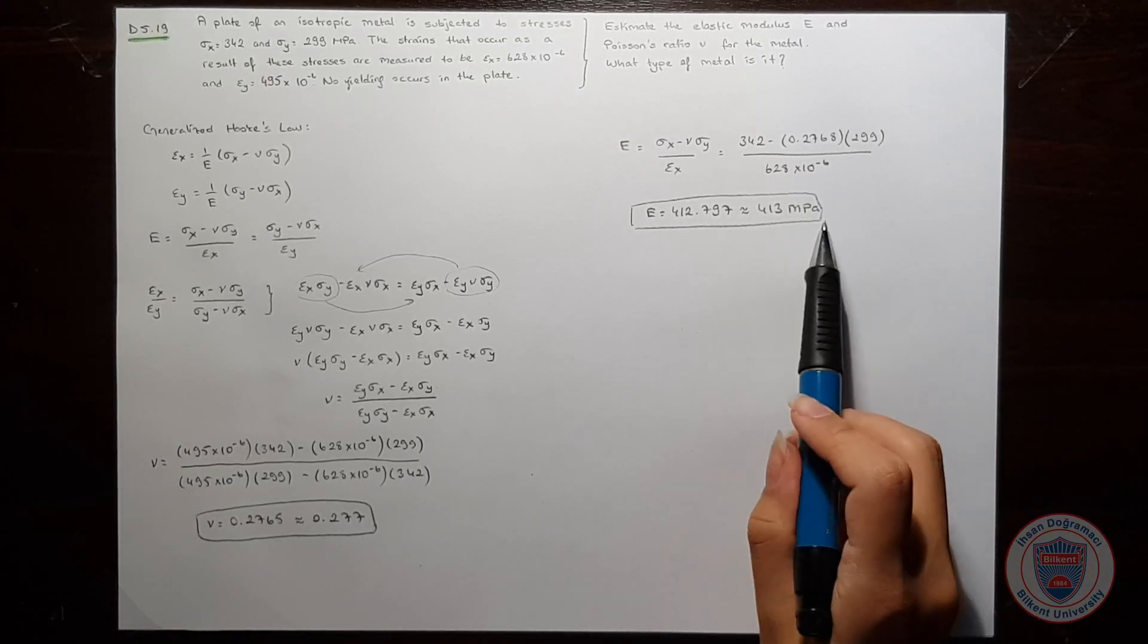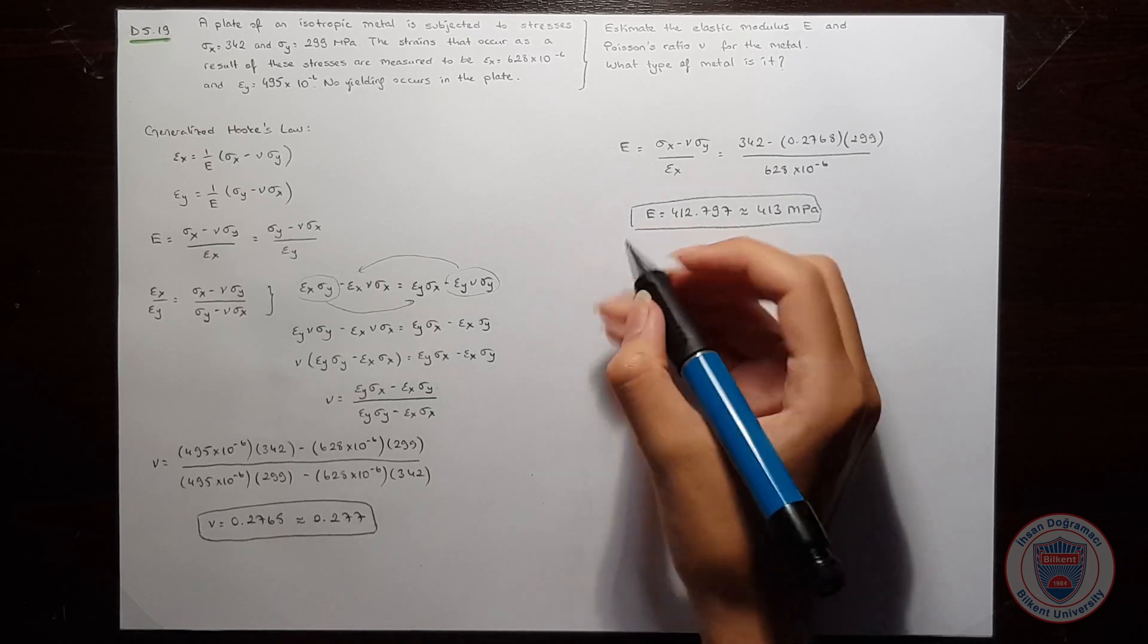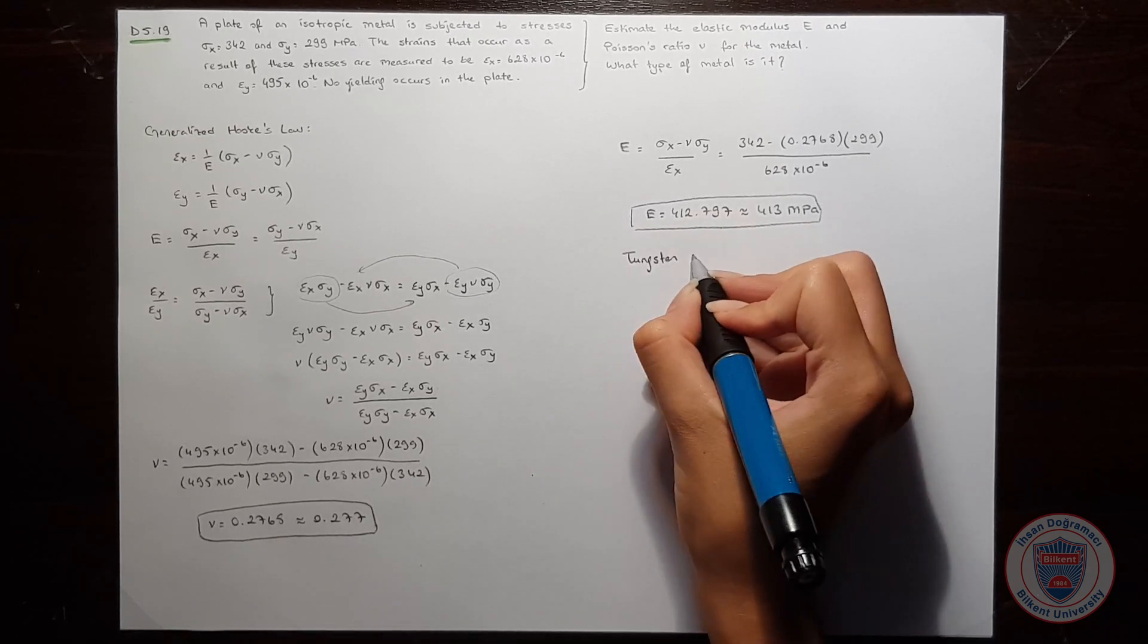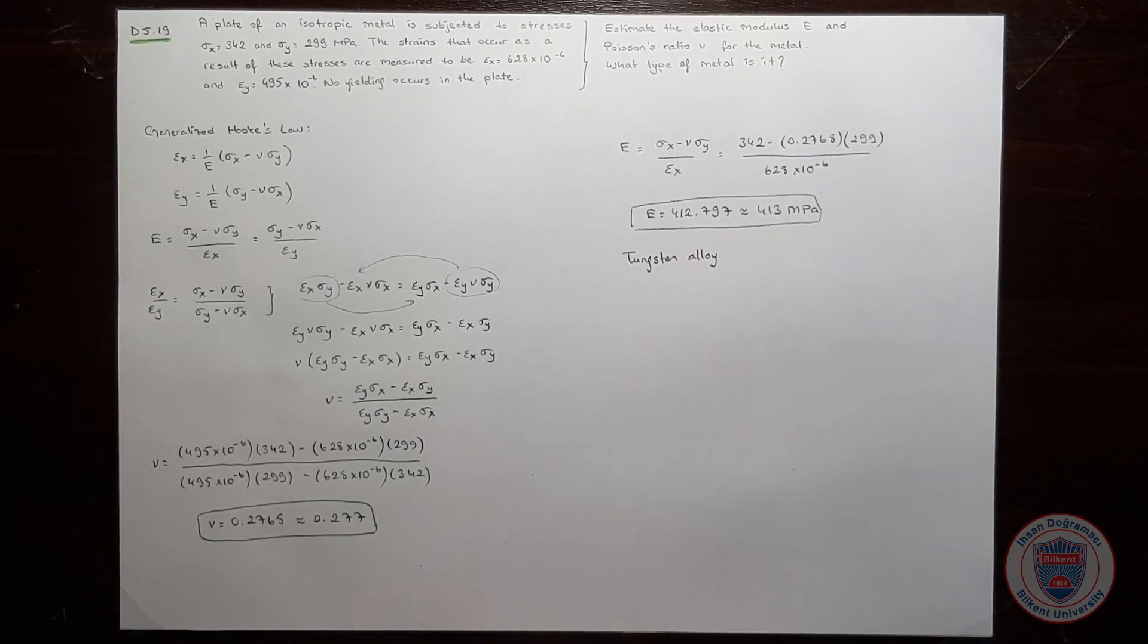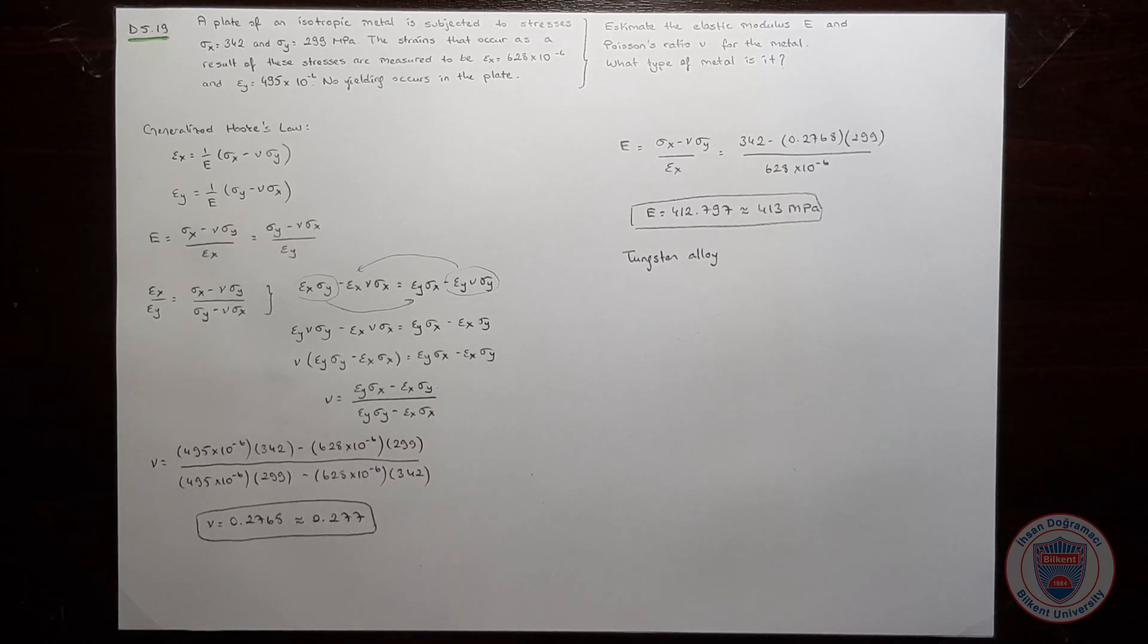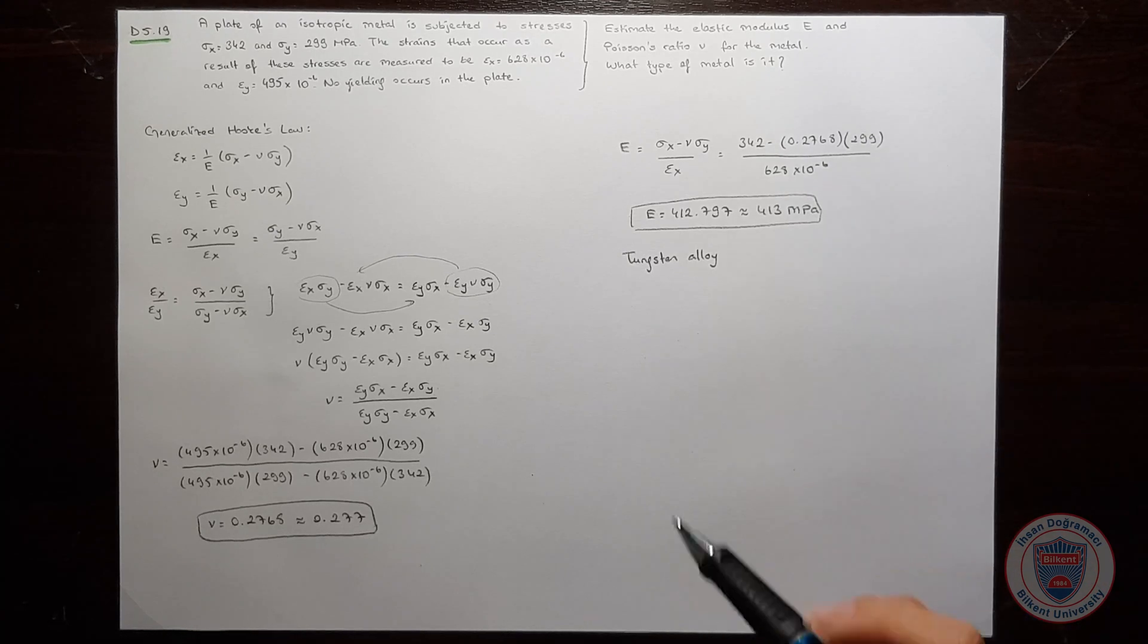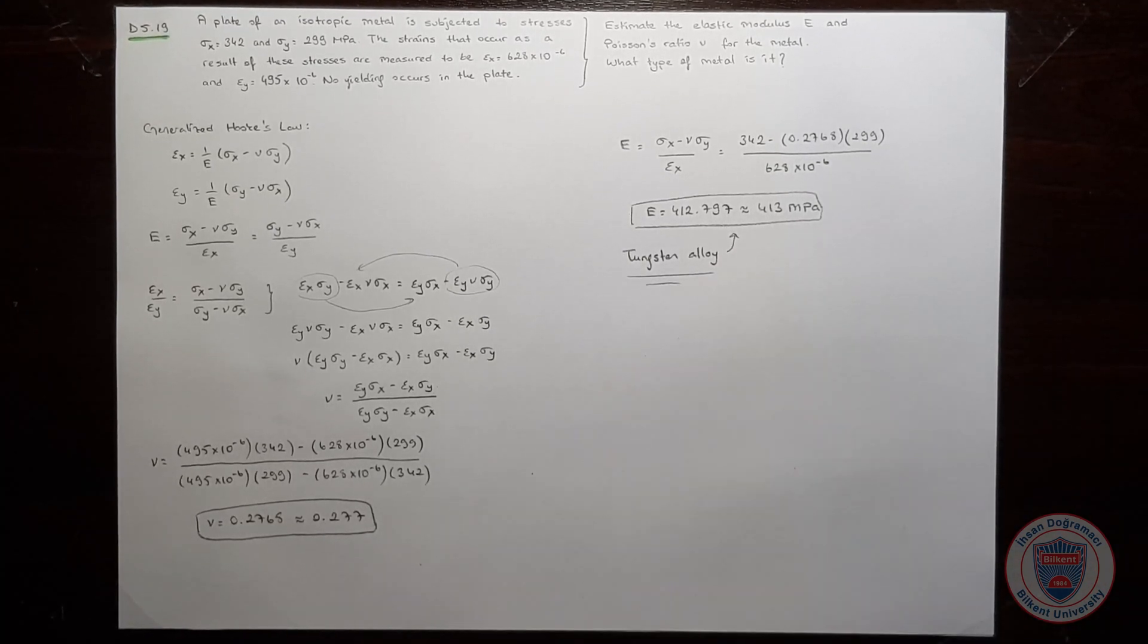When we look at our book, from table 5.2, we see that tungsten alloy has a Young's modulus close to the value we found. So we can say that the metal is tungsten alloy, and we are done with the solution.